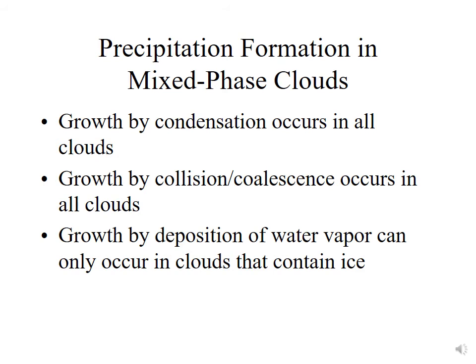Precipitation formation in mixed phase clouds: warm clouds are clouds without ice. Mixed phase clouds have both liquid water and ice. Growth by condensation occurs in all clouds regardless of whether they're warm, mixed phase, or glaciated — completely ice covered. Growth by collision coalescence occurs in all clouds that have liquid in them. Growth by deposition of water vapor can only occur in clouds that contain ice. Mixed phase clouds have essentially three different growth mechanisms: condensation, collision coalescence, and vapor deposition. That's why mixed phase clouds almost always precipitate.